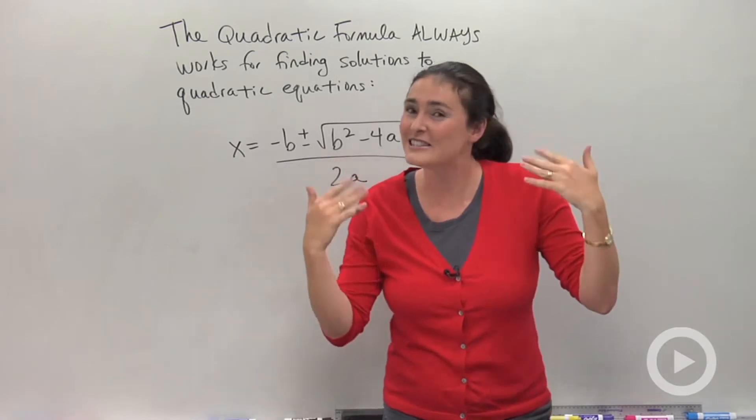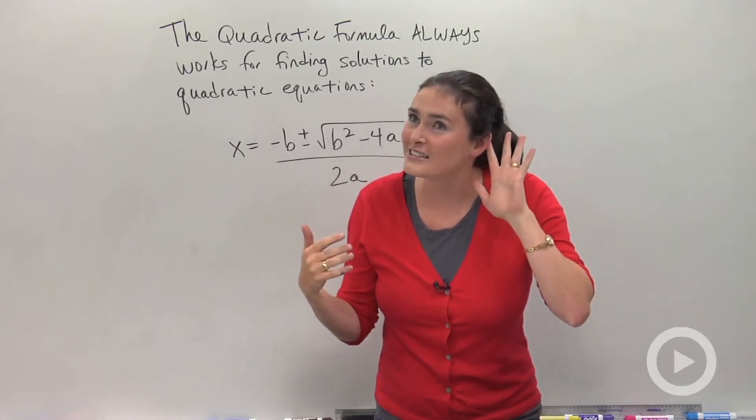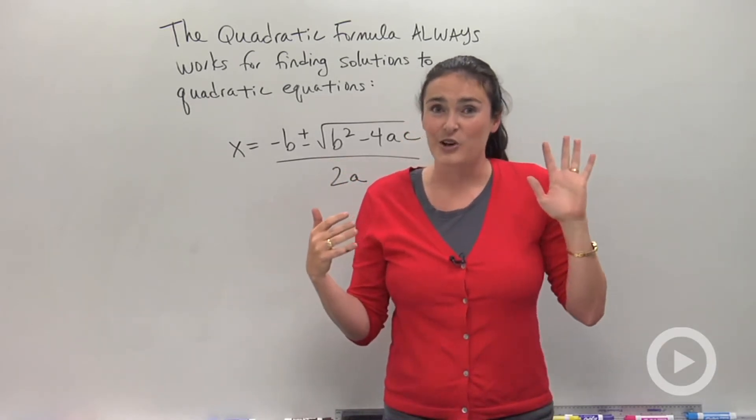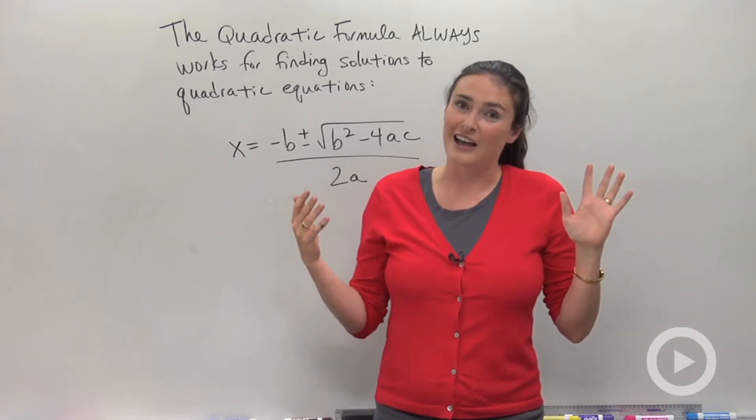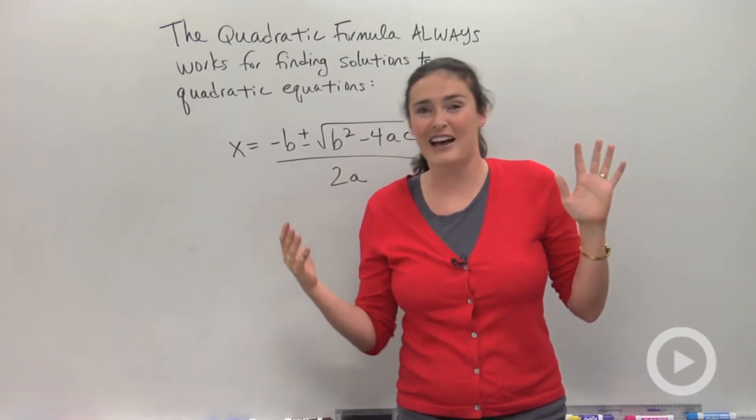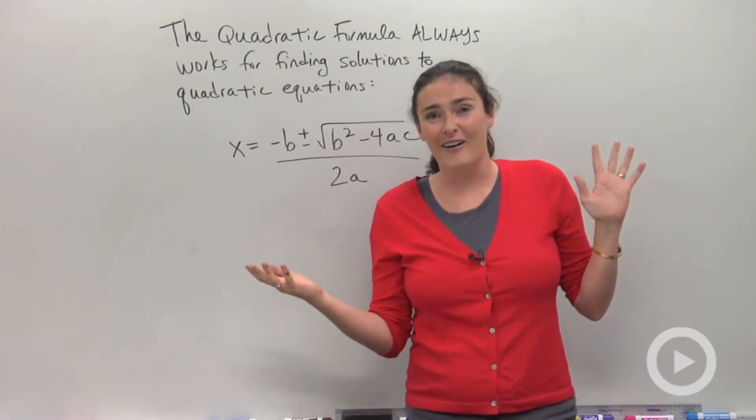Let's do it again. Ready? Here we go. Everyone sing. I want to hear you. Ready, set, go. X equals negative b plus or minus square root of b squared minus 4ac all over 2a.